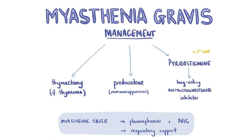Myasthenic crisis can also be precipitated by pregnancy, intercurrent illness such as a respiratory tract infection, hypokalemia, and severe stress. A myasthenic crisis is a life-threatening condition defined as worsening of myasthenic weakness resulting in acute respiratory failure due to weakness of the respiratory muscles. It is treated with plasmapheresis to filter out autoantibodies plus IV immunoglobulins. Respiratory support including intubation and mechanical ventilation is essential.